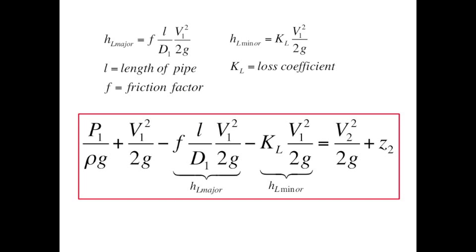The H with subscript L stands for head loss, which is the energy loss while fluids travel through pipes. Major head loss is energy loss due to friction between traveling fluid and the wall. The length of the pipe also affects the major head loss.